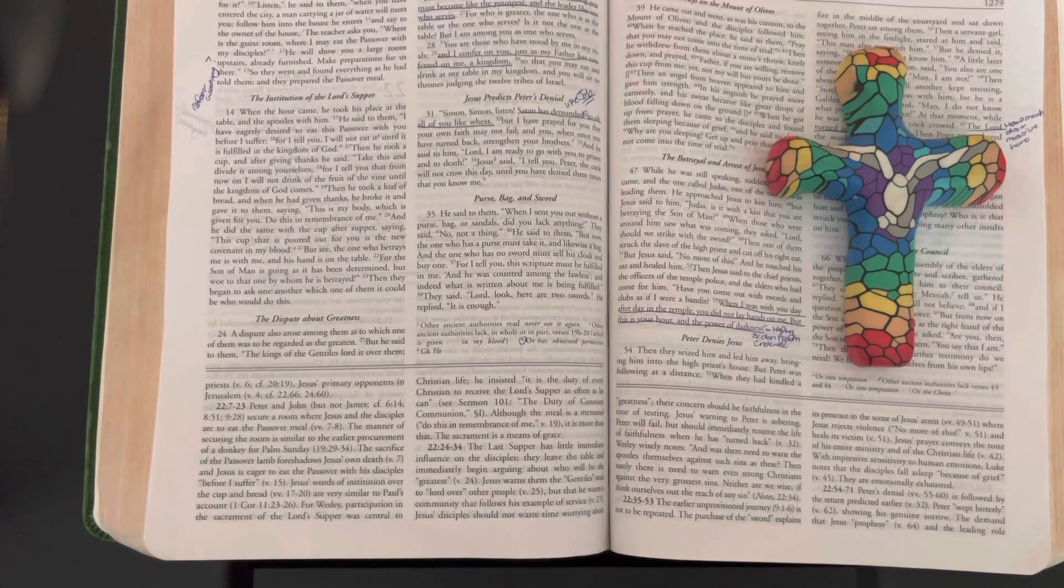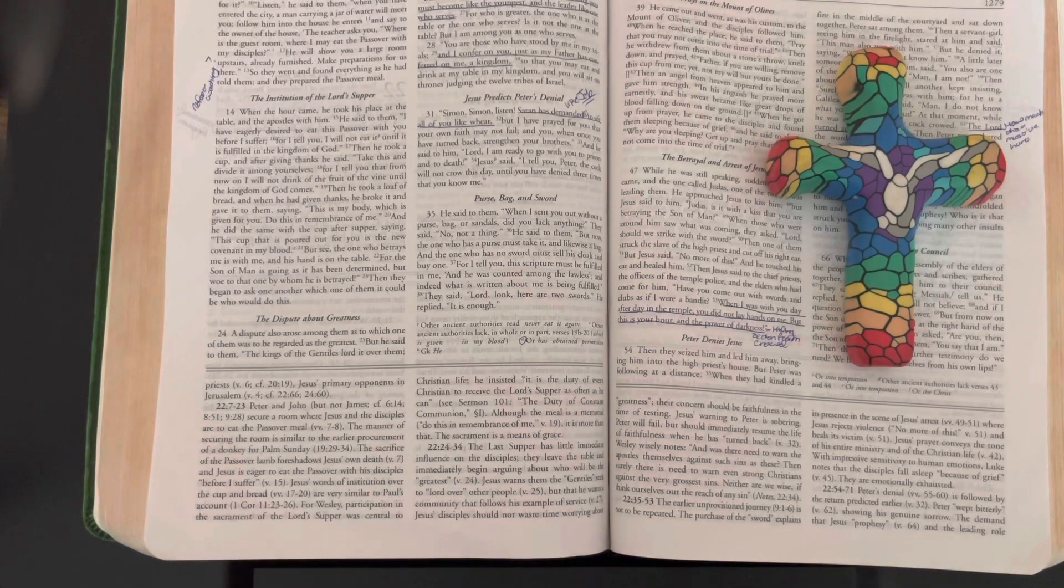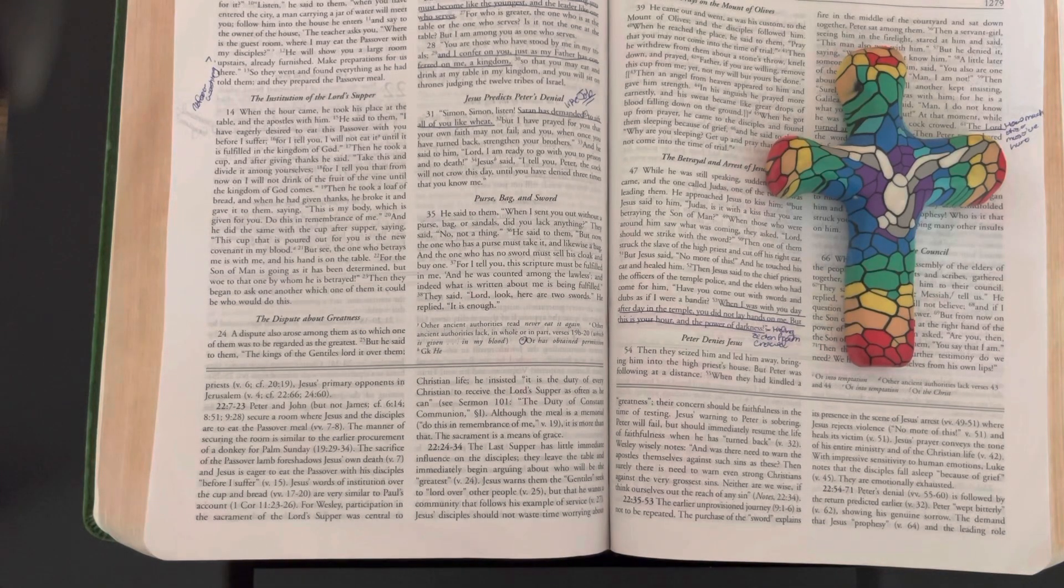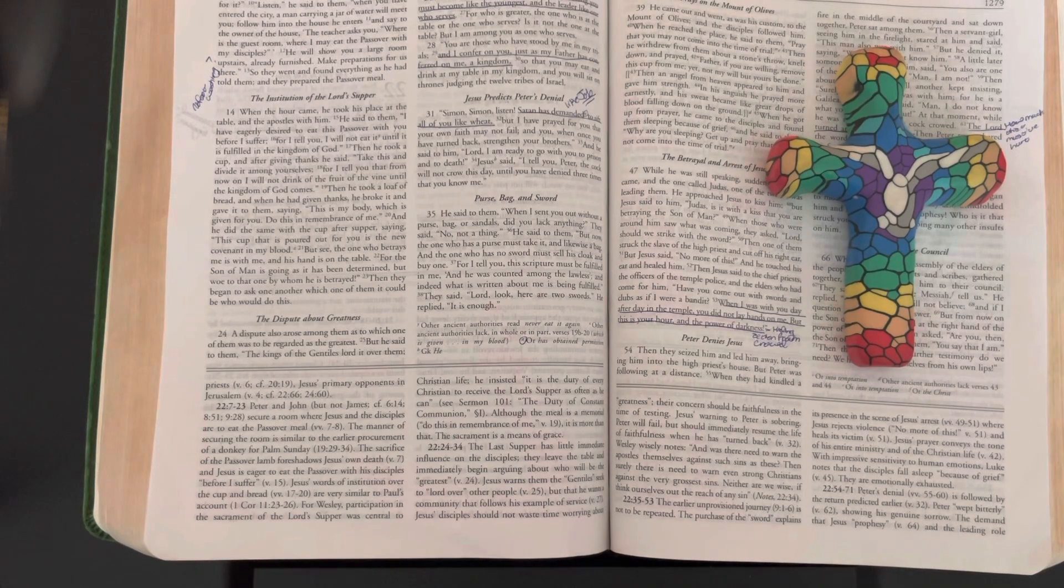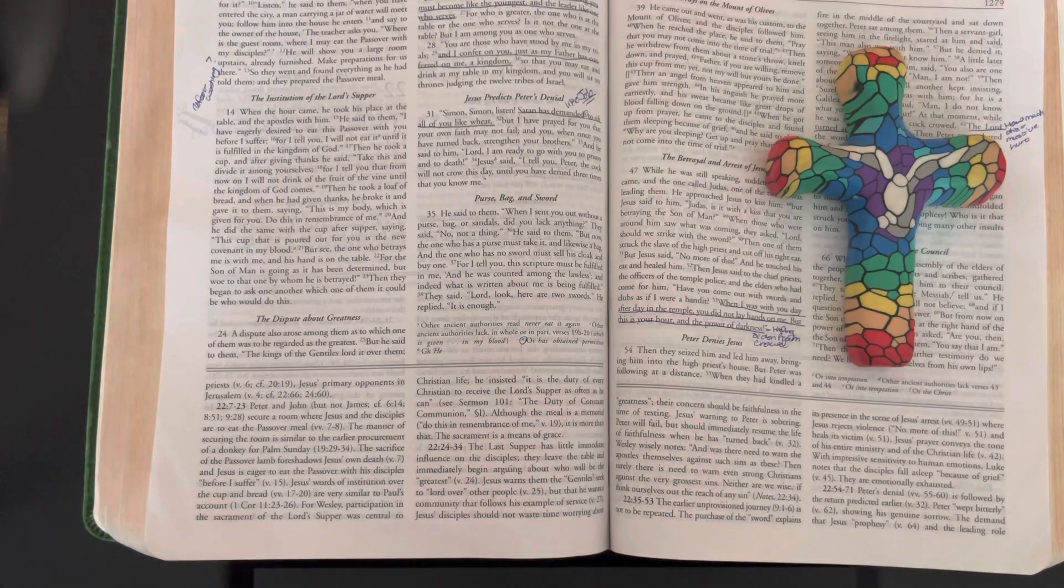"Simon, Simon, listen. Satan has demanded to sift all of you like wheat, but I have prayed for you that your own faith may not fail. And you, when once you have turned back, strengthen your brothers." And he said to him, "Lord, I am ready to go with you to prison and to death."